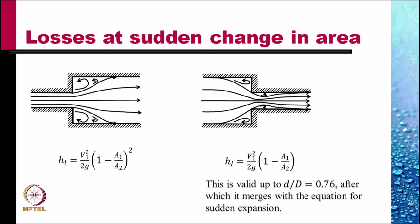The losses at a sudden decrease in area, sudden contraction is given by this formula. So, this is valid up to d by capital D equals 0.76. Lowercase d is the value of the smaller pipe. Capital D is the diameter of the larger pipe from which the flow is coming. When d by capital D is larger than 0.76, the result is like this.